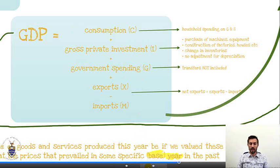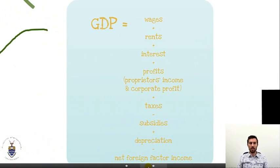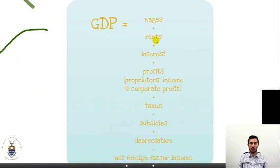What about the income approach? The income approach asks: what income is earned from providing the factors of production that go into GDP? We have households earning wages. Some households might also earn rent and interest. Then we've got firms earning profits. Those firms could also earn interest and rents.